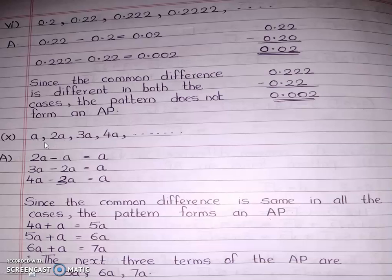Next, 10th question: A, 2A, 3A, 4A, etc. A is the first term, second term is 2A. We calculate second term minus first term, third term minus second term, fourth term minus third term. When I subtracted, I got A, A, A. Since the common difference is the same in all cases, the pattern forms an AP.